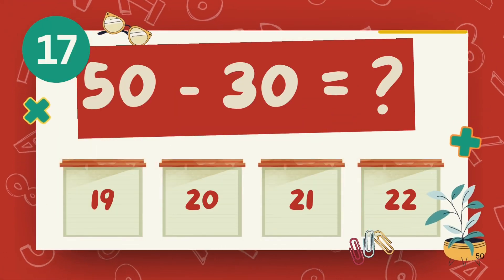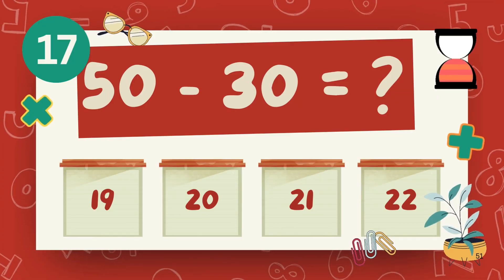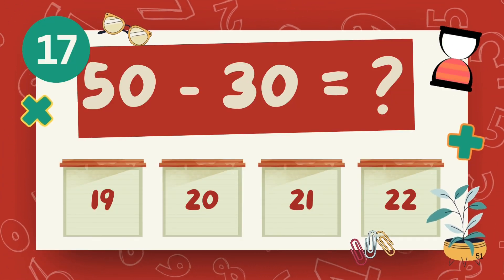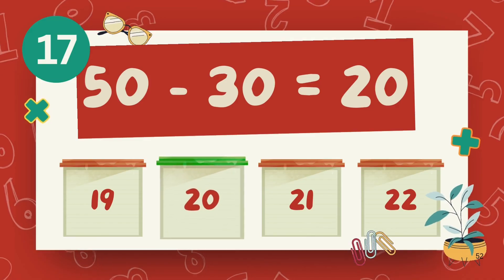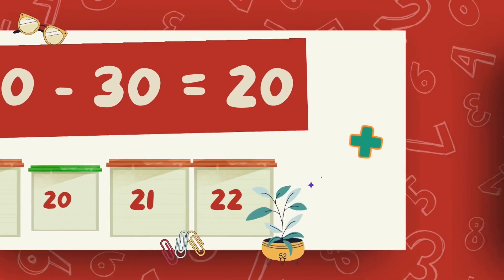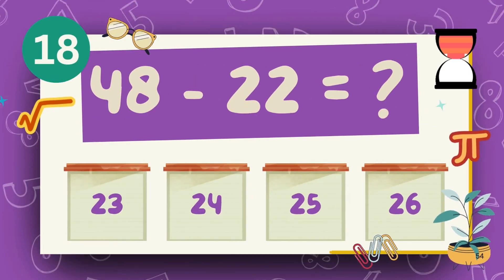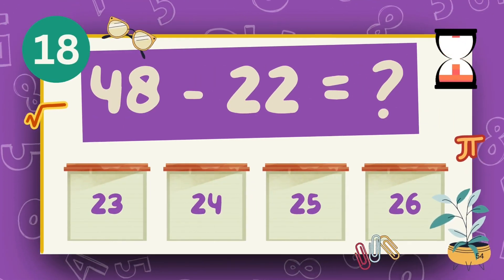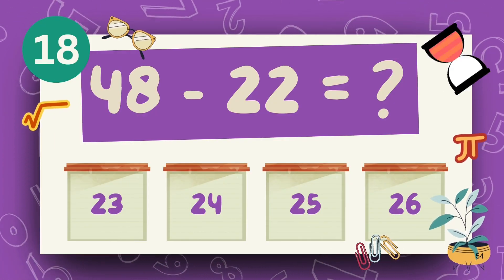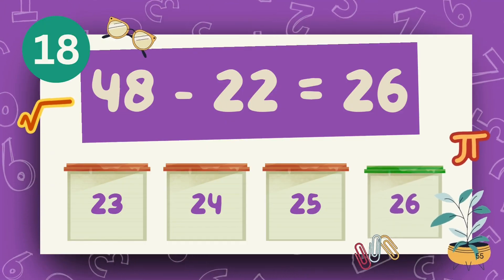What is 50 minus 30? The answer is 20. What is 48 minus 22? The answer is 22.